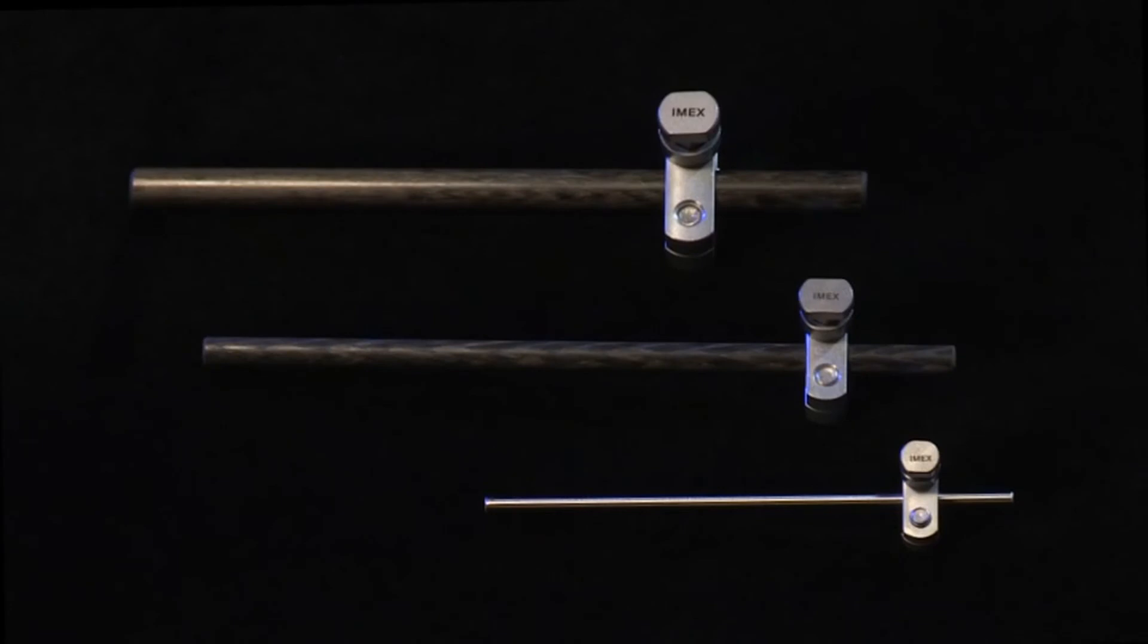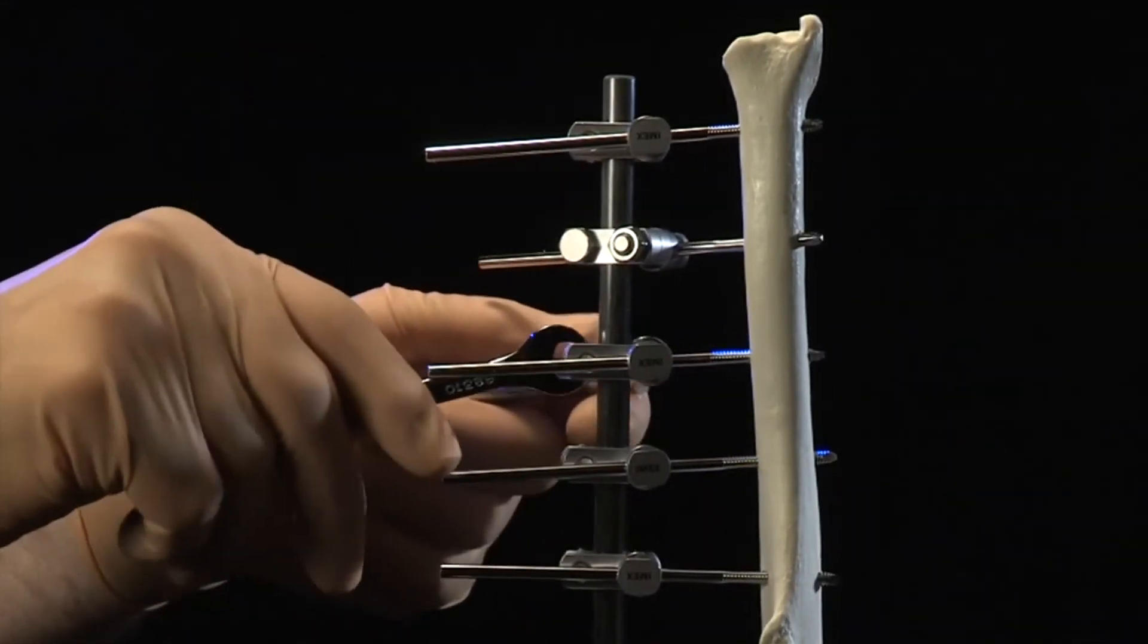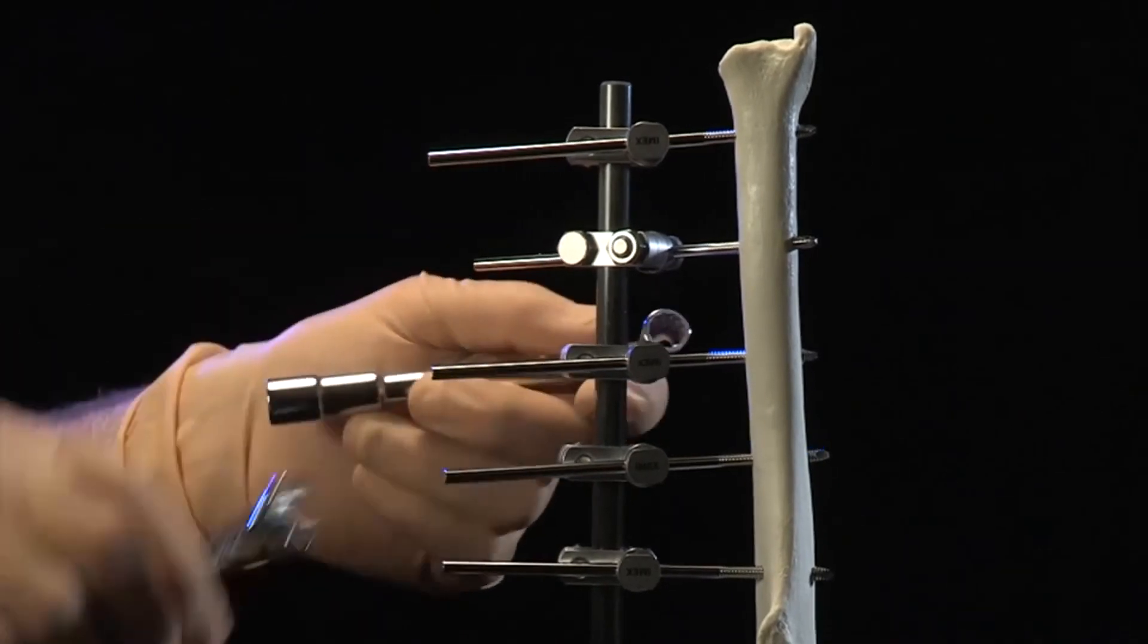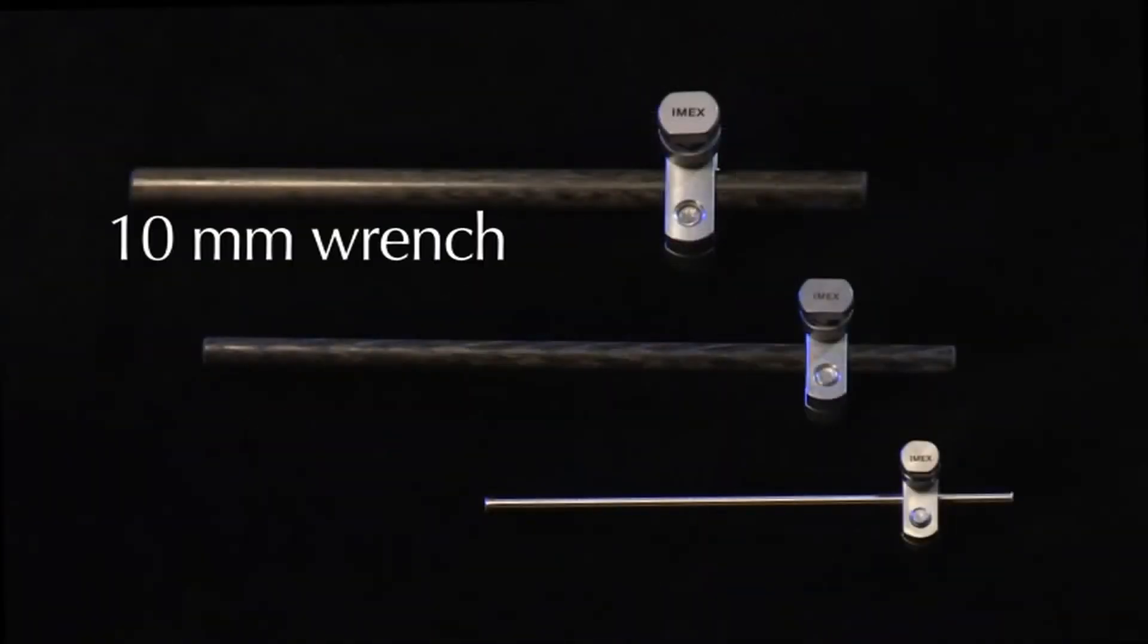The large SK clamp grips pin diameters ranging from 3 mm to 4.8 mm. The large SK clamp utilizes a 10 mm wrench to tighten all bolts and provide any desired counter torque. The large SK clamp supports connecting rods of 9.5 mm in diameter, which are available in carbon fiber or aluminum.